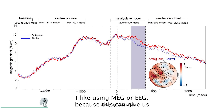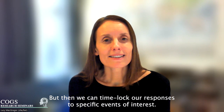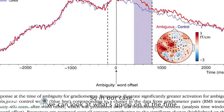I like using MEG or EEG because this can give us a continuous record of brain activity while listeners are just listening for comprehension. But then we can time-lock our responses to specific events of interest, so in our case we can look at what's going on at the time where the listener encounters the ambiguous word.